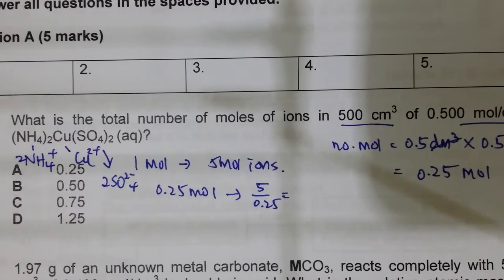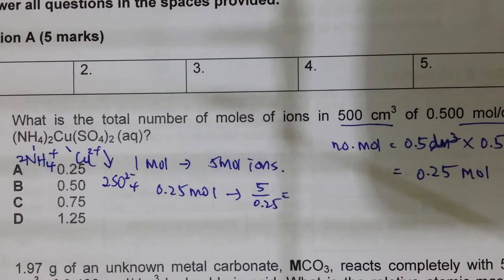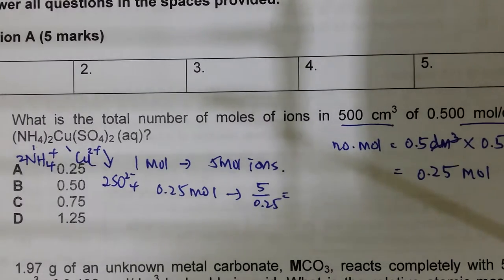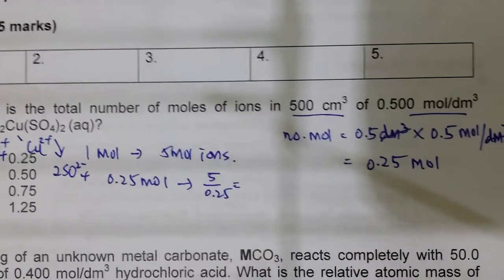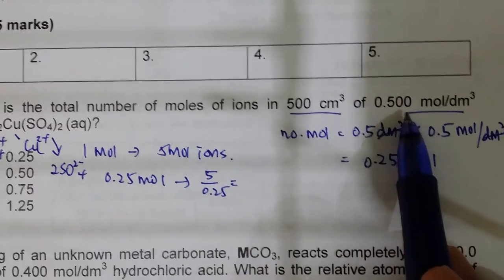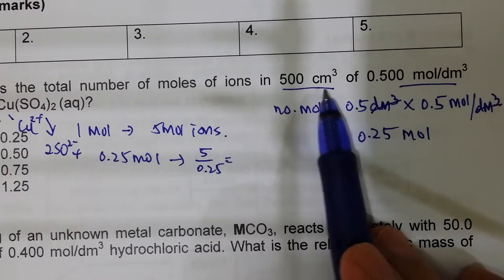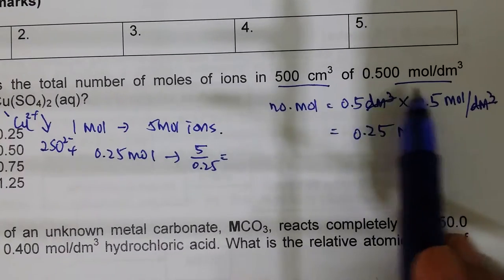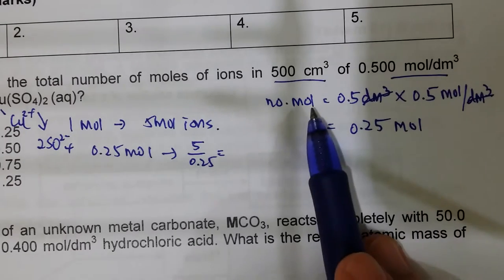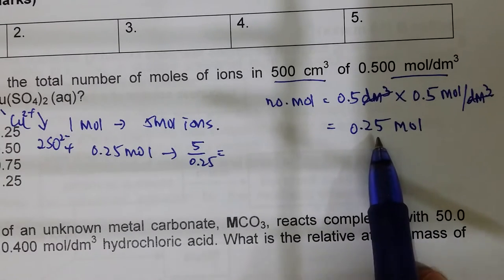This is a 2015 Pure Chemistry class test 5 on chemical calculations, acid-base, and salts. For question one, you have 500 cm³ of a 0.5 mol/dm³ compound. From the volume and concentration, you should be able to find the number of moles of the compound, which is 0.25 mol.